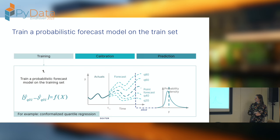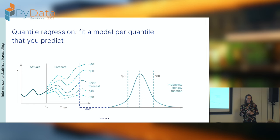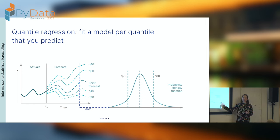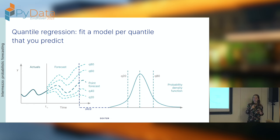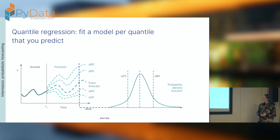The most used approach is called conformalized quantile regression — that's a good term to Google. With quantile regression, you want not just a point forecast but the full distribution. What you do is train one model for every quantile. If you want every percentage, you train 99 models for percentages 1 through 99. When you put all those predictions next to each other, you have the distribution. A very nice thing is that because each model uses all your input features, the prediction differs for different samples — it's not constant over time, it really adapts to the input space.